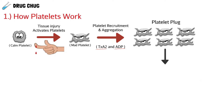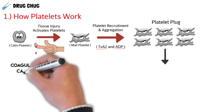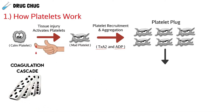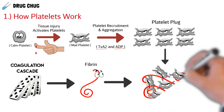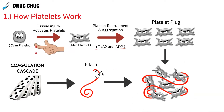We also have something called the coagulation cascade, which is just a series of steps that eventually lead to fibrin being made. Fibrin is literally just a fiber or string, and what it does is intertwine with the platelet plug, creating a fibrin clot — all of those mad platelets and fibrin sticking together, forming a pretty strong blood clot.